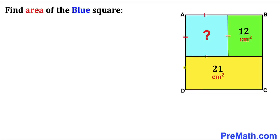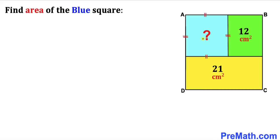Welcome to pre-math. In this video we have got this square ABCD, as you can see in this diagram, that has been divided into three parts such that the area for this green rectangle is 12 centimeter square whereas the area for this yellow rectangle is 21 centimeter square. Now we are going to calculate the area of this blue square.